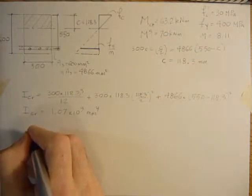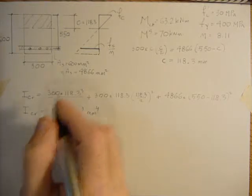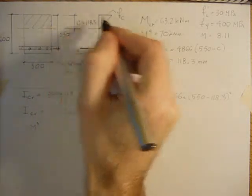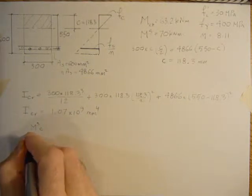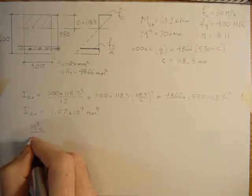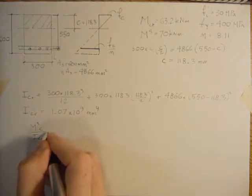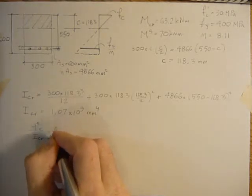So using MY over I, we're going to have moment service times this distance divided by I will equal the stress in the concrete. So MSC over I cracked will equal stress in the concrete.